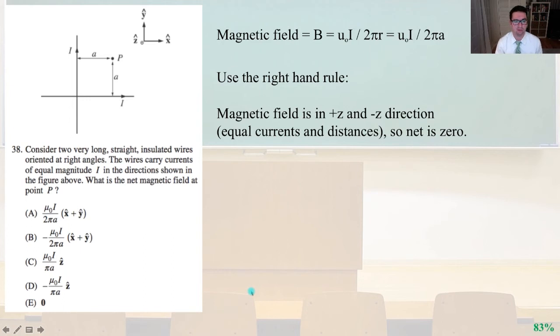Number 38. Consider two very long, straight, insulated wires oriented at right angles. The wires carry currents of equal magnitude I in the direction shown in the figure above. What is the net magnetic field at point P?